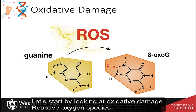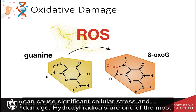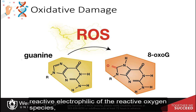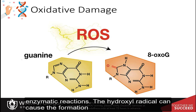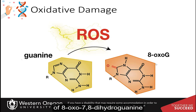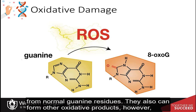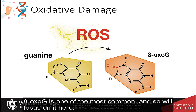Let's start by looking at oxidative damage. Reactive oxygen species can cause significant cellular stress and damage. Hydroxyl radicals are one of the most reactive electrophilic of the reactive oxygen species and can be produced by ultraviolet and ionizing radiations or from other radicals arising from enzymatic reactions. The hydroxyl radicals can cause the formation of 8-oxo-7,8-dihydroguanine, or 8-oxo-G, from normal guanine residues, as well as other oxidative products. However, 8-oxo-G is one of the most common, so we'll focus on it here.